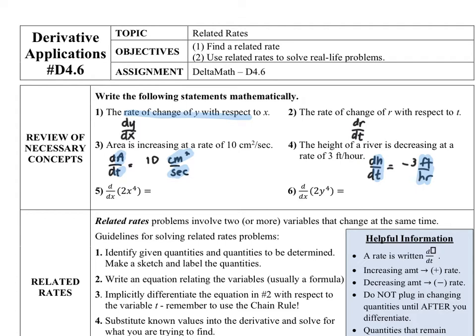Questions five and six are going to remind you about notation and how to find the derivative. Question number five says d over dx of 2x to the fourth. That Leibniz notation is saying let's do the derivative of 2x to the fourth with respect to x, so x is our independent variable. You're just going to do a derivative as normal, and we get 8x cubed.